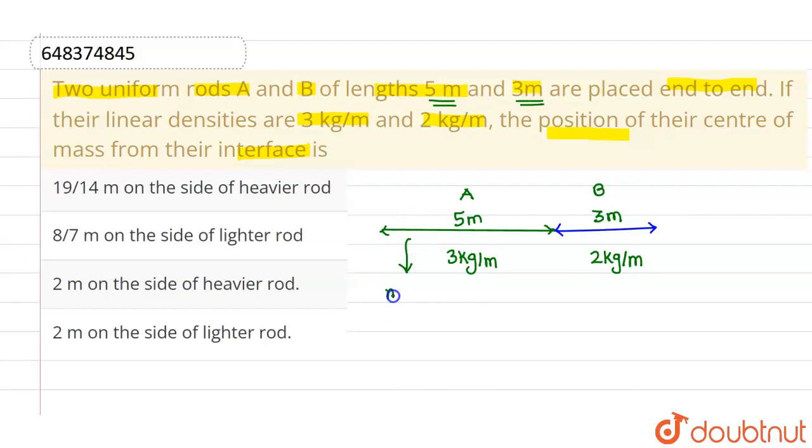Then mass of this particular rod will be the length into linear density. So mass of this particular rod will come out to be 15kg. And similarly, mass of this will be length into linear density, and that will come out to be 6kg.